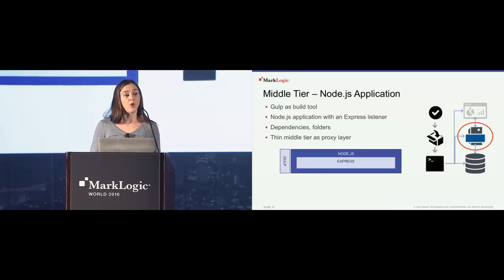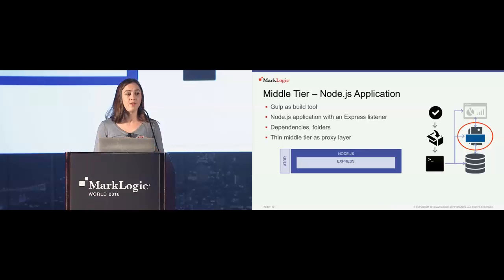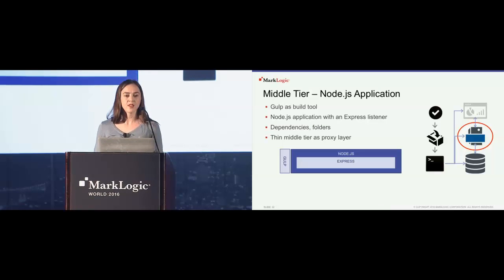Then you have Gulp, which is managing the tasks in the middle tier. It installs the Node.js application, the Express listener, and the dependencies there. Right now we have a very thin layer because this is mostly used for POCs. In production, you'd want to more finely tune your integrations and your security. This is more of a pass-through proxy layer right now, but you could add your own application logic.